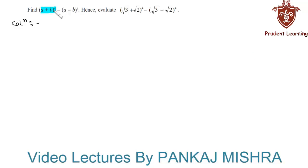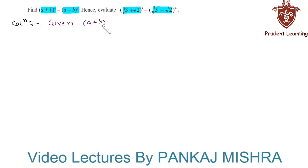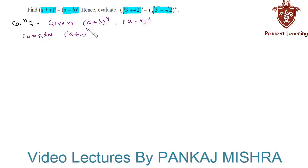Find (a + b) whole raised to 4 minus (a - b) whole raised to 4, and hence evaluate (√3 + √2) whole raised to 4 minus (√3 - √2) whole raised to 4. Let us see the solution for this problem. We are given (a + b) whole raised to 4 minus (a - b) whole raised to 4. First, let us consider (a + b) whole raised to 4 and find the expansion.